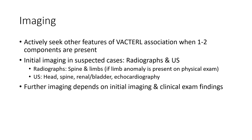Imaging. VACTERL features are suspected when one or two components are present. Initially, imaging is plain radiograph and ultrasound. Radiograph of spine and limb if a limb anomaly is proven on physical exam. Ultrasound of spine, renal, and bladder. Further imaging depends on imaging and clinical assessment findings.